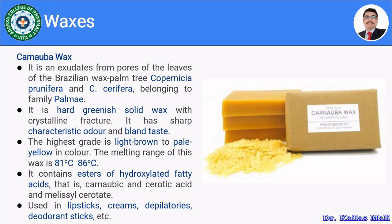The highest grade of carnauba wax is light brown to pale yellow in color with a melting point of 81 to 86 degrees Celsius. It mainly comprises esters of hydroxylated fatty acids — carnaubic acid and cerotic acid — along with melissyl cerotate. It is used in the manufacturing of lipsticks, creams, depilatories, and deodorant sticks.